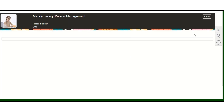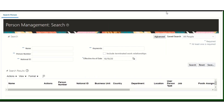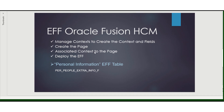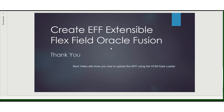Now there is the table I explained earlier. We can query the information to confirm whether the record has been created, which is the PER_PEOPLE_EXTRA_INFO table, and we can ensure all the information is available. This is how to create an EFF - extensible flex fields - in Oracle Fusion. In the next video, I will show you how to upload this EFF information using HCM Data Loader.